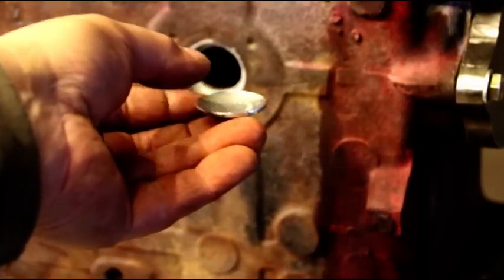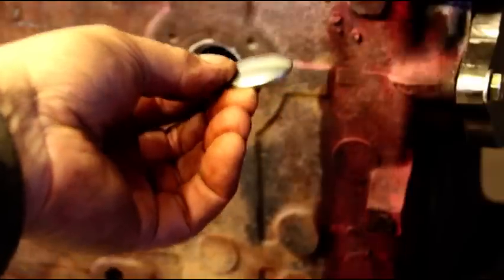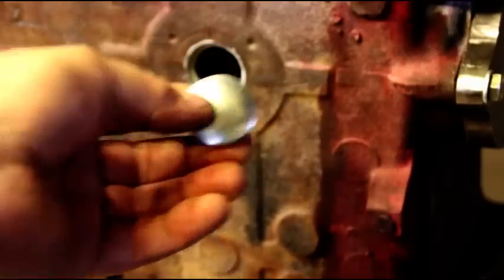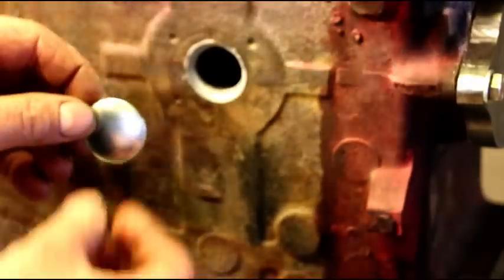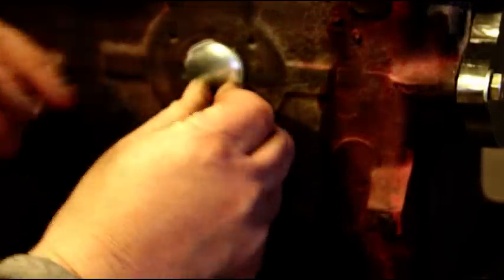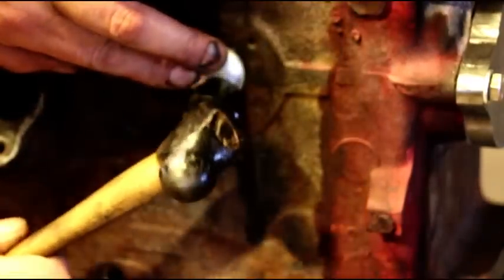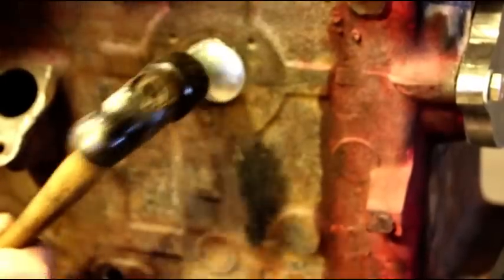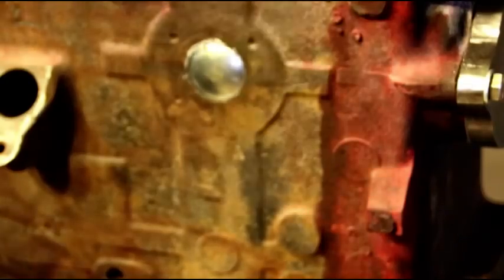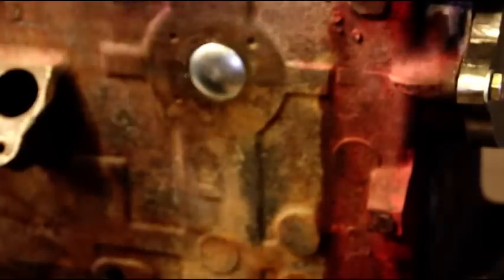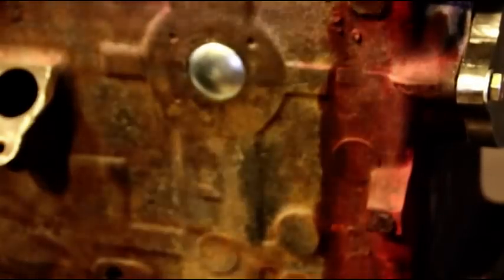Okay, when you get your core plug, one side's gonna be dished, one side's obviously gonna be pushed out. You want to take the dished side of it and put that in. It should be a snug fit. Okay, now that's bottomed out on the shoulder in there. And if you put it just like that, it won't stay in there, so what you have to do now is kind of collapse this side of it. So we're just gonna hit that with a hammer.